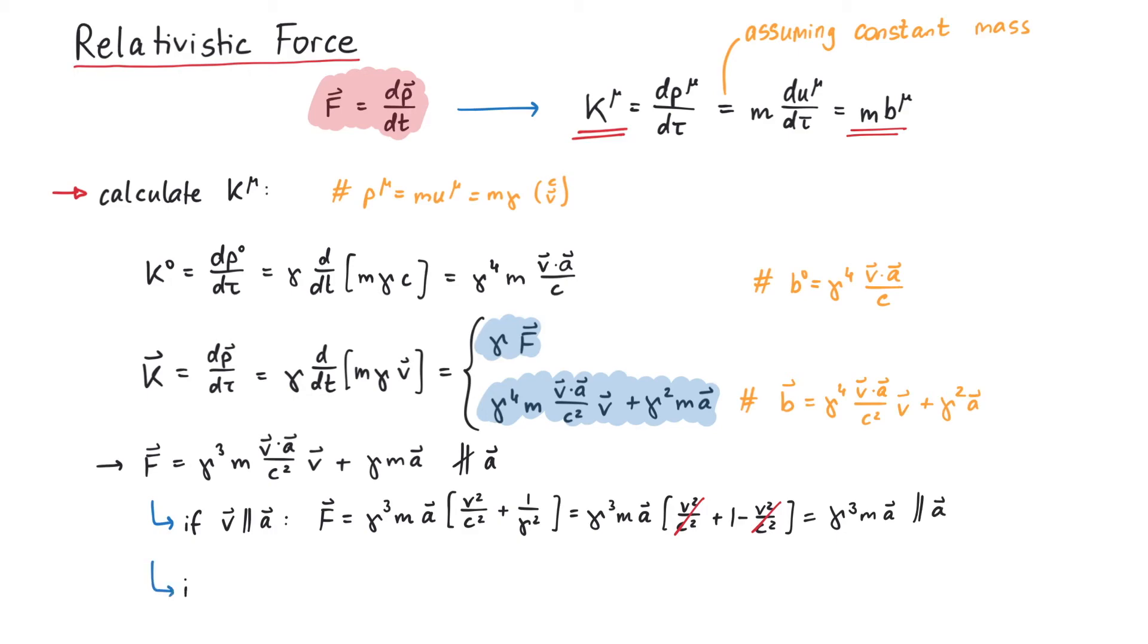And if the 3-velocity and the 3-acceleration are perpendicular to each other, the first term vanishes and only gamma ma remains. Also in this case, the 3-force is parallel to the 3-acceleration.